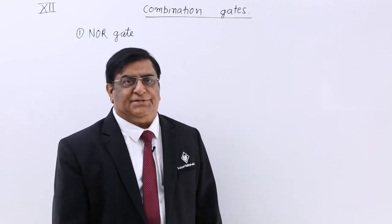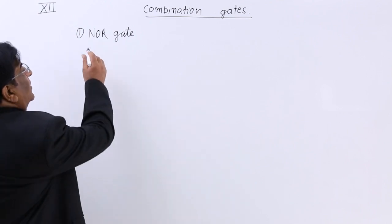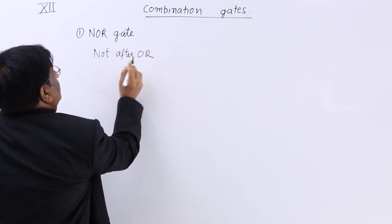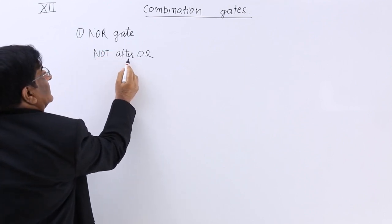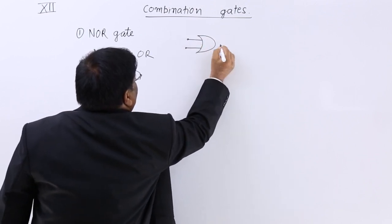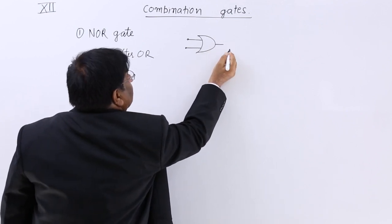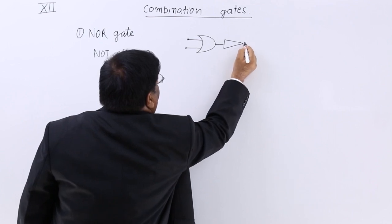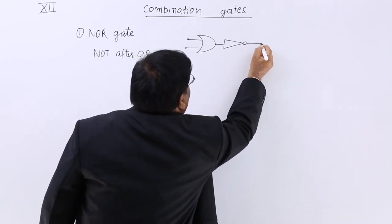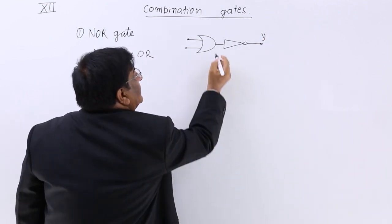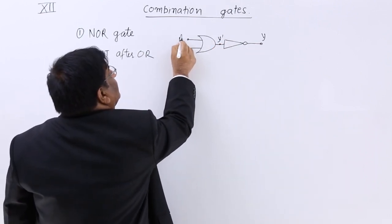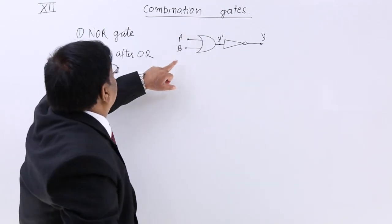Now we will study two combination gates. The first is NOR gate. NOR, if you analyze this, means NOT after OR. So this is a NOT gate which is after OR gate. Here is an OR gate, and after this we fix up a NOT gate — NOT after OR. There is an intermittent output Y dash and this is the final output Y, with inputs A and B. This combination is known as NOR gate.